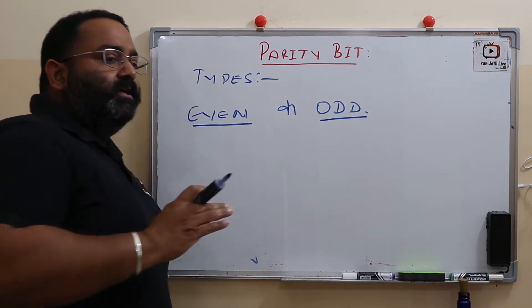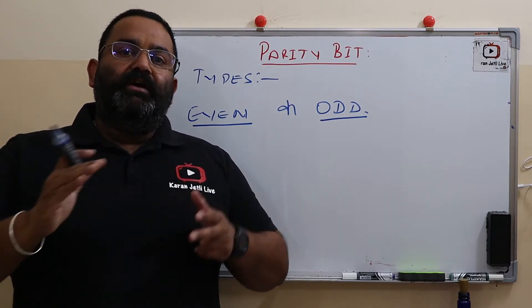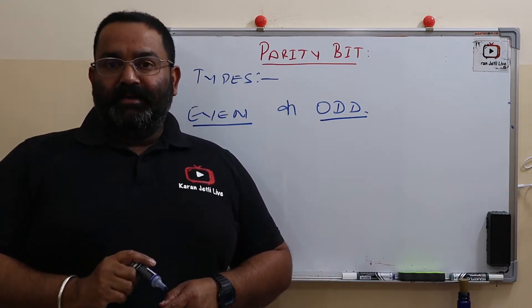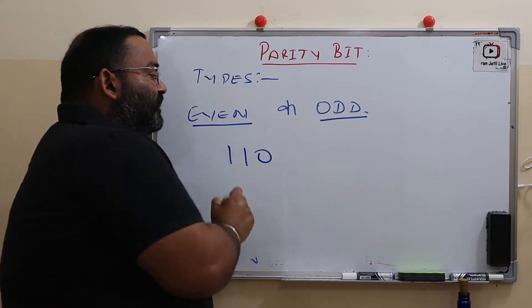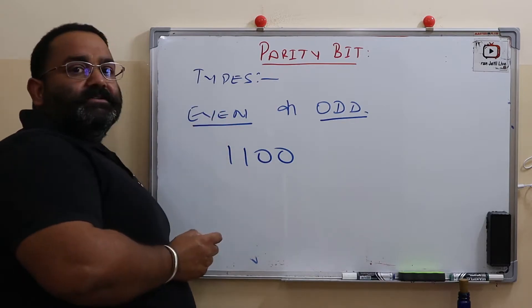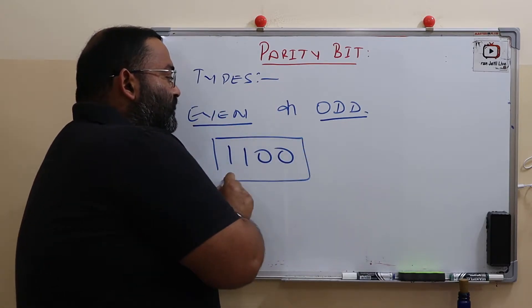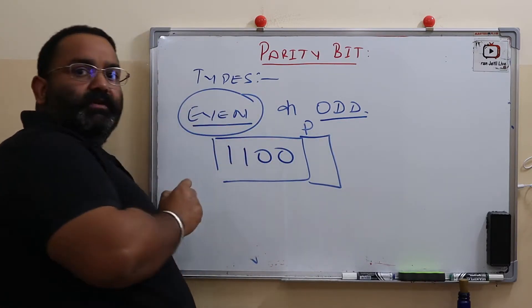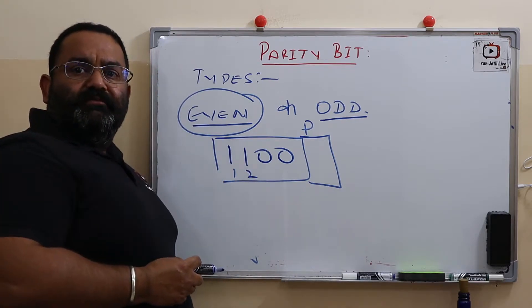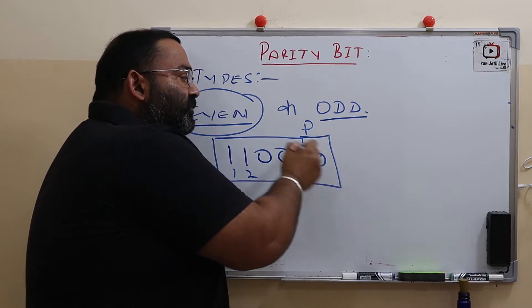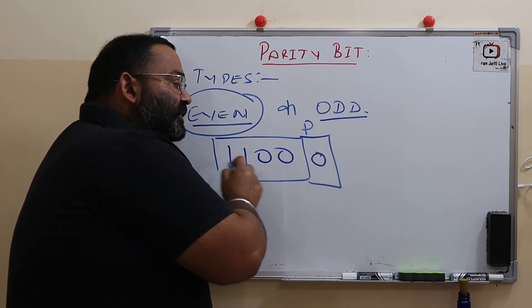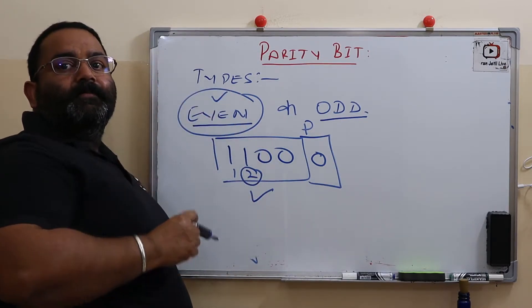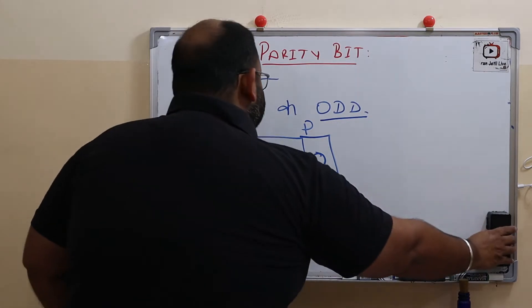For example, suppose the data we are transmitting is 1100. Here is the parity bit. If we are going for even parity, count the number of ones: one, two — so two is an even number. We will make the parity bit zero. The total number of ones in this data is two, which is even. This is even parity.